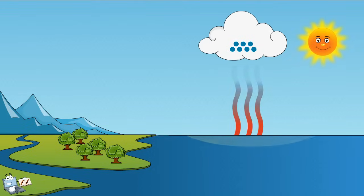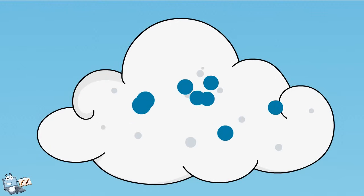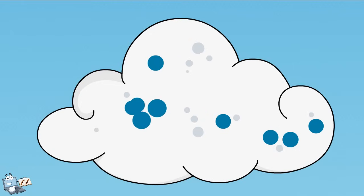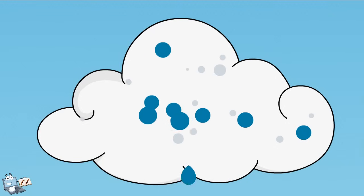The droplets bang together and form even bigger drops. When the drops get heavy, they fall because of gravity. They even grow and bump into one another on their journey from the cloud to the ground.